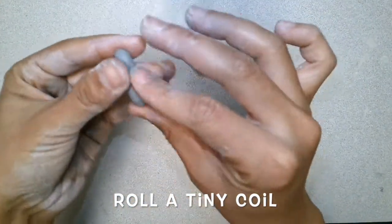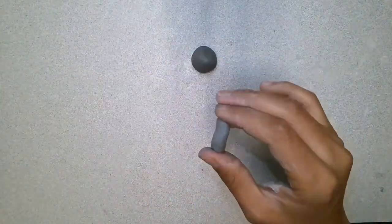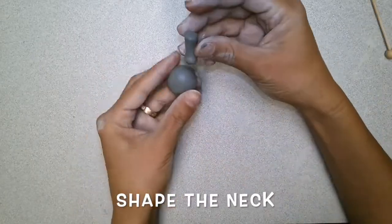Next I'm going to create the vase neck. I'm going to do so by rolling out a small coil, getting it to the shape I want it to be.